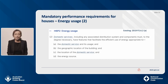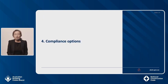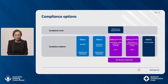One question you probably have is: how does H6P2-2 relate to H6P2-1? H6P2-2 focuses on an individual component or system of domestic services, whereas H6P2-1 sets the minimum overall performance level of regulated key fixed appliances. Both H6P2-1 and H6P2-2 need to be satisfied. I have just covered the mandatory performance requirements. Now I will cover the compliance options to meet these requirements. The compliance level for thermal performance and energy usage is the two performance requirements we just talked about: H6P1 and H6P2.